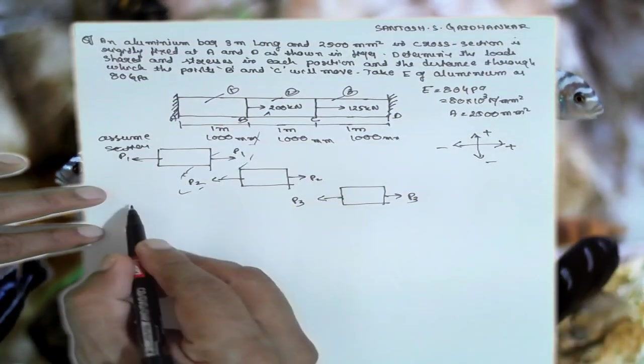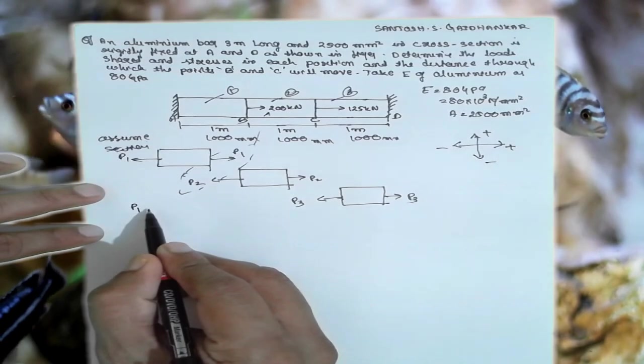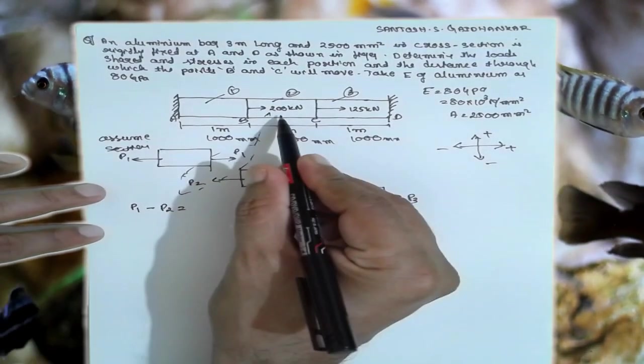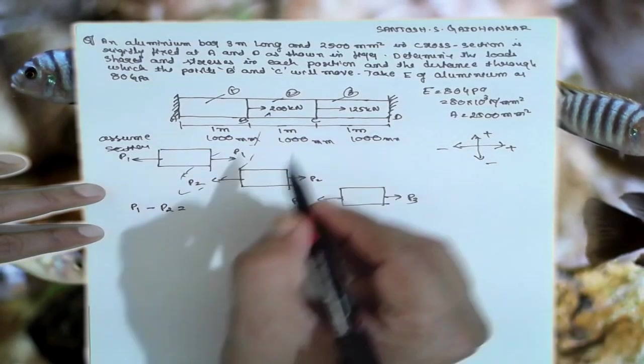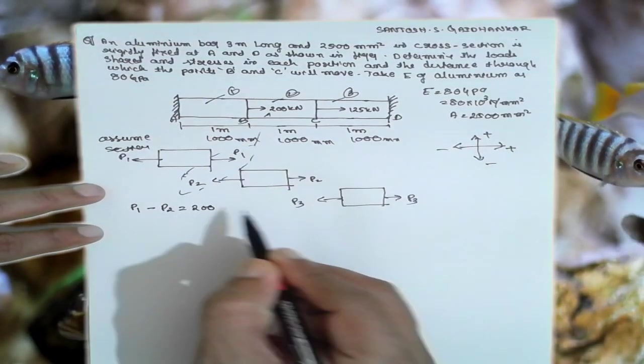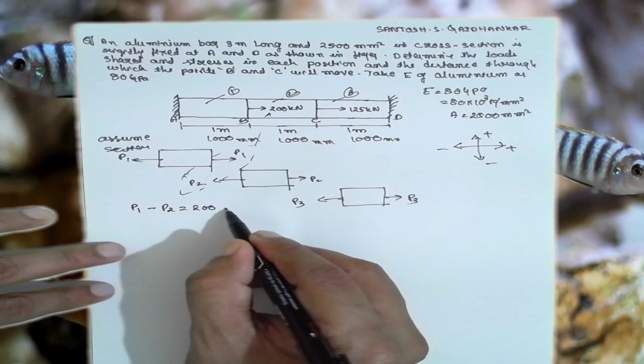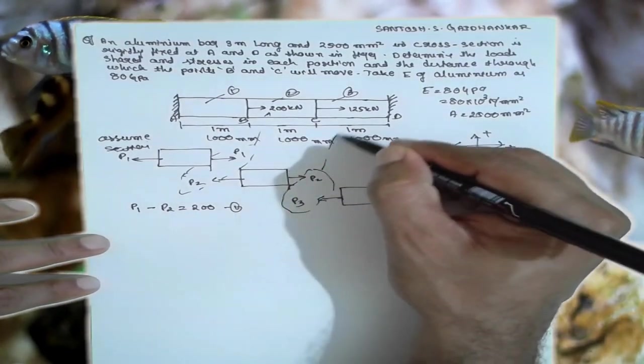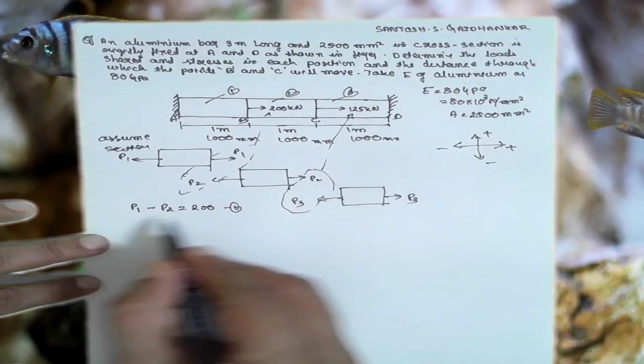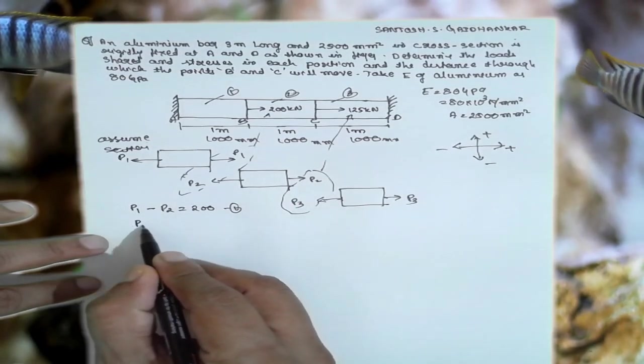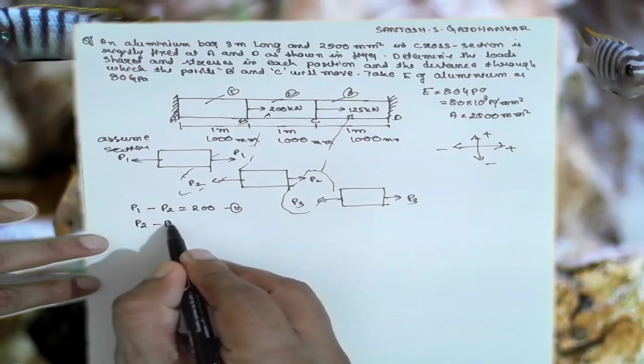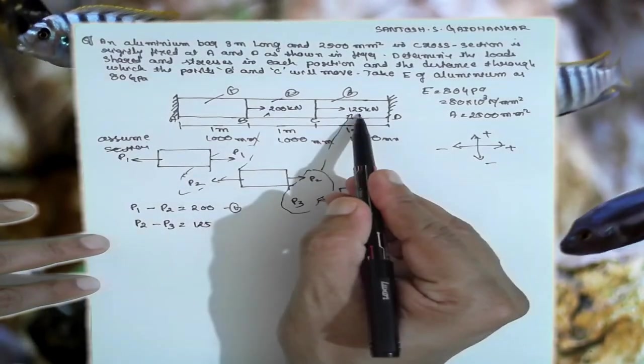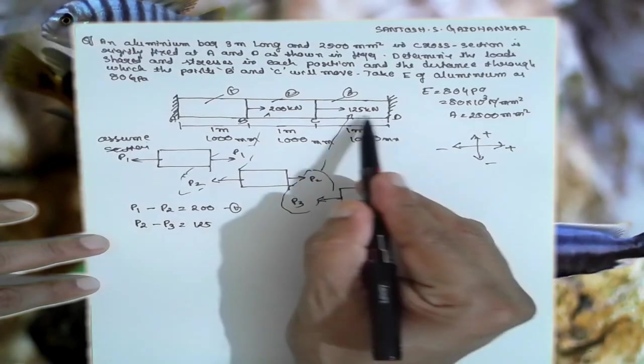Now, P1 is positive. Write P1 minus P2 is equal to, direction is positive here, therefore you have to consider 200 kN. Equation 1. Similarly you have to consider the equation 2 here. Plus P2 minus P3 is equal to 125, 125 kN. Positive here, positive. Equation 2.